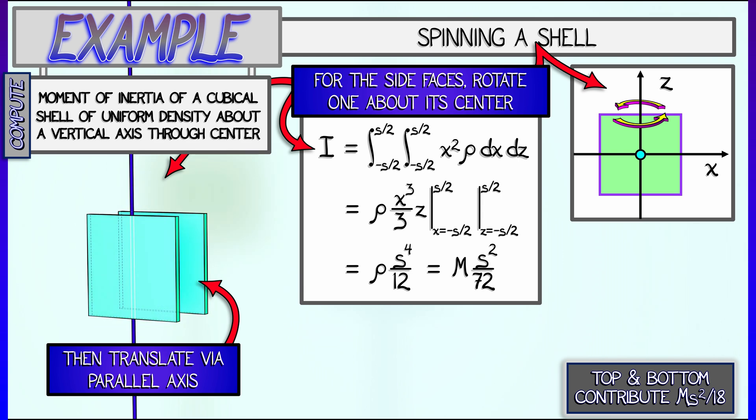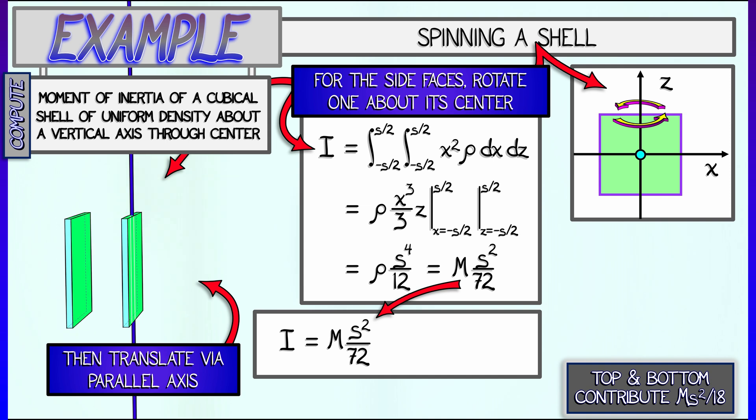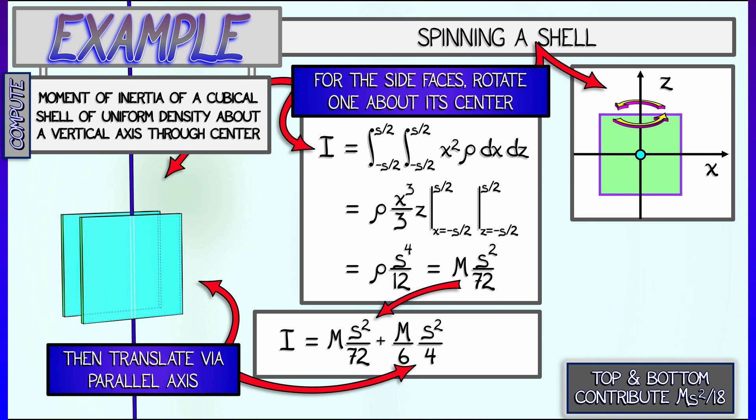But when we translate it by a distance s over 2, then what we get from the parallel axis theorem is ms squared over 72 plus m over 6, the mass, times quantity s over 2 squared.